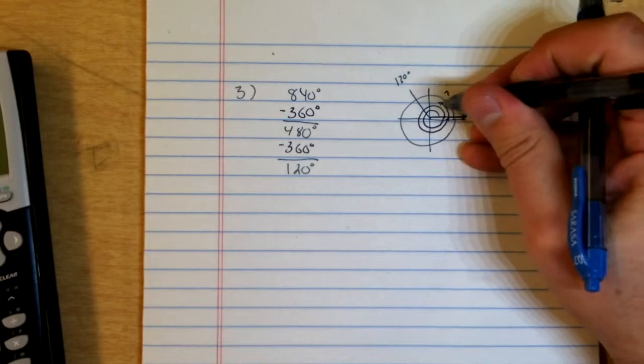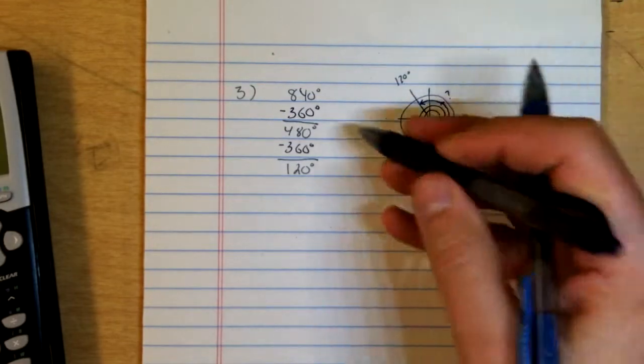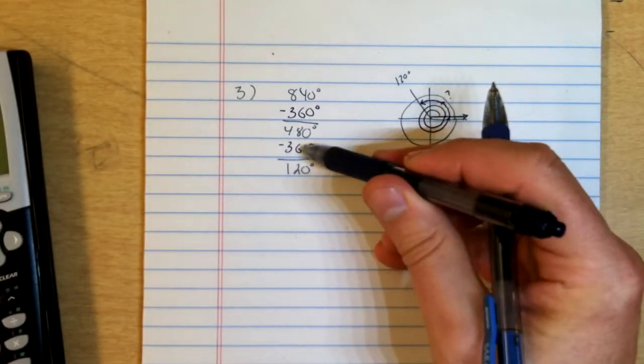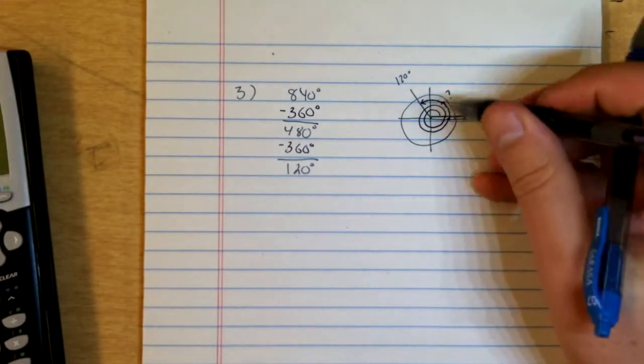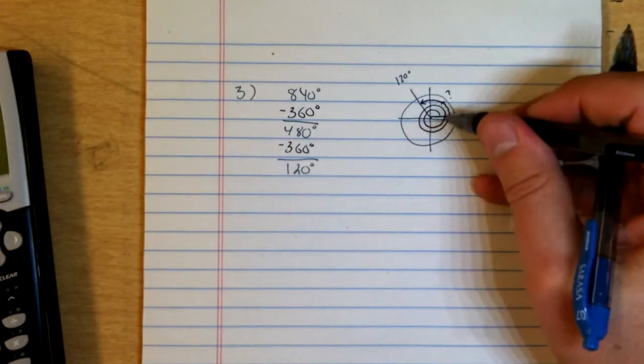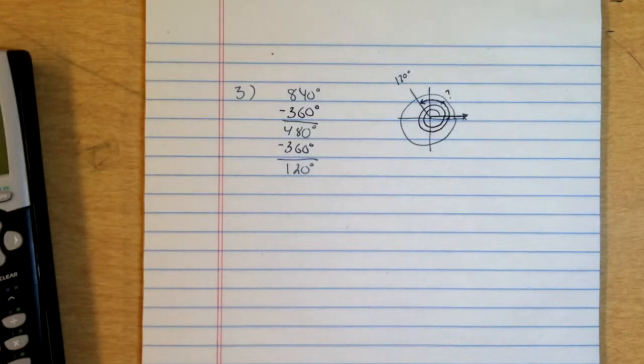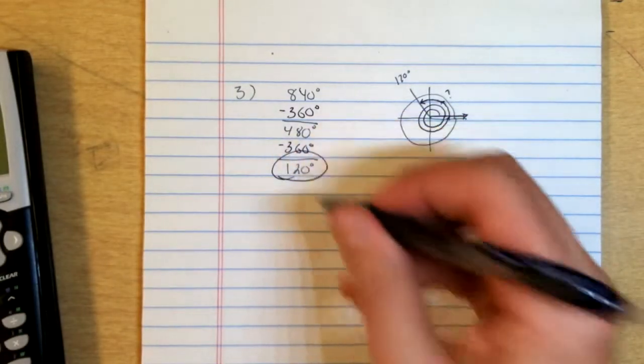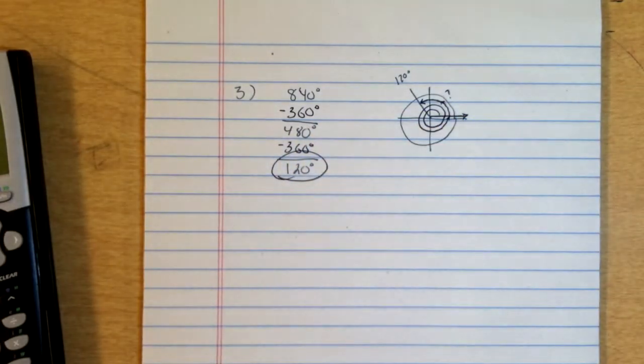And so if we keep this going around, we know what really happened is we went around once, we went around twice, and we stopped at the 120 degrees, 360, 720, 840. But this is all we need for our answer. It's 120 degrees, and that's number 3.